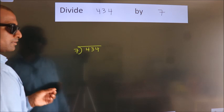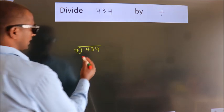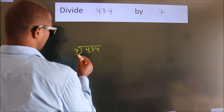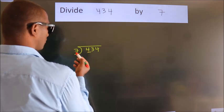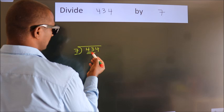This is your step 1. Next, here we have 4, here 7. 4 is smaller than 7. So we should take two numbers, 43.